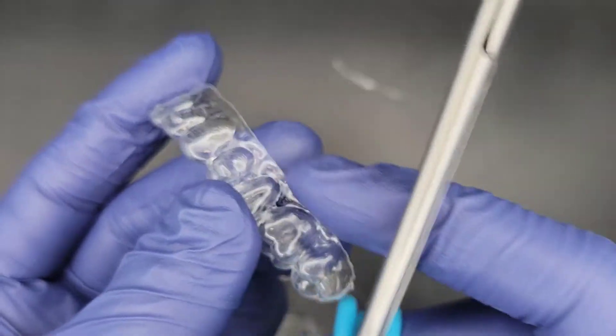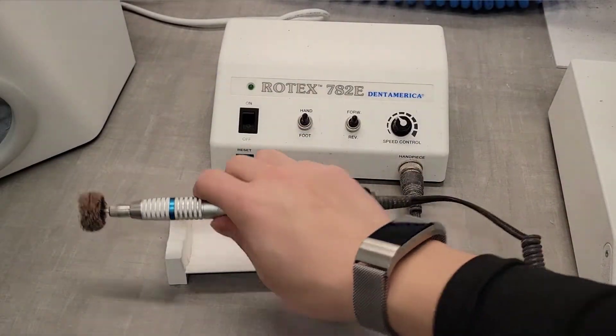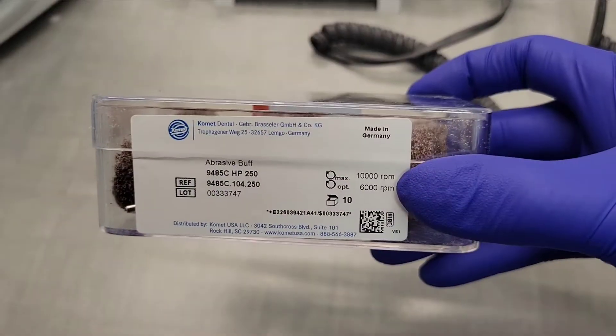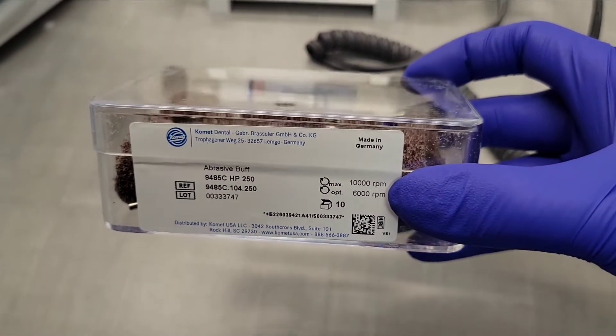Our next step is to polish our aligners. We use this Rotex handpiece unit for our polishing, as well as these abrasive burrs. Any electrical lab motor and handpiece is fine for this process.